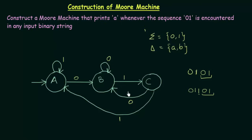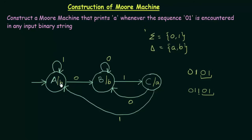Now we need to convert this DFA to a Moore machine. In a Moore machine the output is associated to the states. We reach state C on getting input 01, so whenever we encounter the sequence 01 we should print A — therefore state C gets output A. In all other cases state A and state B will print B.